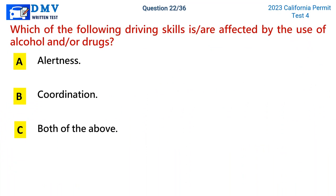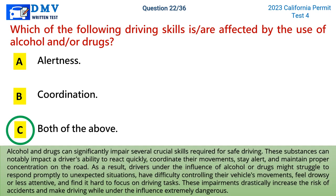Question 22: Which of the following driving skills are affected by the use of alcohol and/or drugs? A) alertness, B) coordination, C) both of the above. The correct answer is C. Alcohol and drugs can significantly impair several crucial skills required for safe driving, including the ability to react quickly, coordinate movements, stay alert, and maintain concentration. Drivers under the influence may struggle to respond promptly to unexpected situations, have difficulty controlling their vehicle, feel drowsy, and find it hard to focus — drastically increasing the risk of accidents.